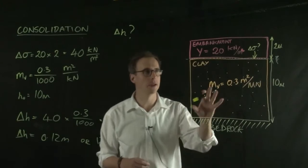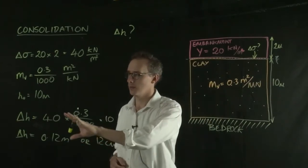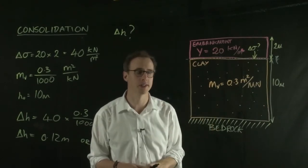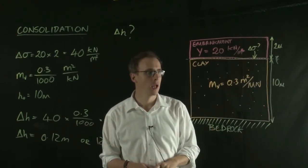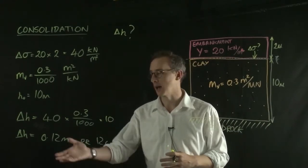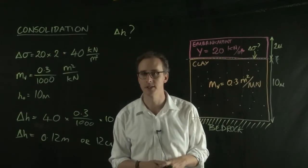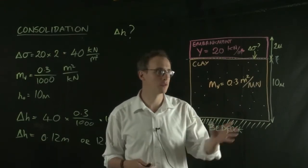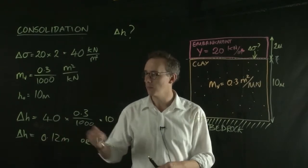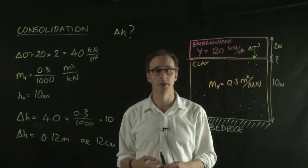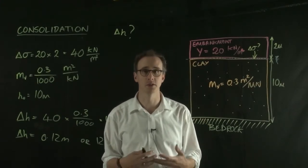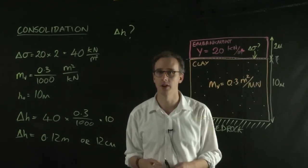That's an example of how we apply this simple total settlement formula. A little bit of a reality check: if you get numbers out of your calculation like 0.12 meters or 12 centimeters, that seems reasonable for a 10 meter layer of clay. If you had a total settlement value of 12 meters, then you might think something was wrong with your calculation. It's worth checking that these numbers make sense when they come out.